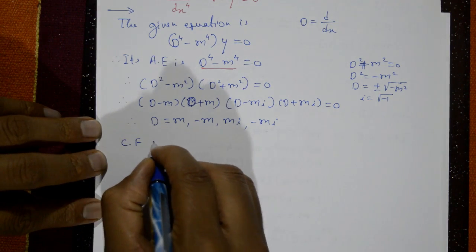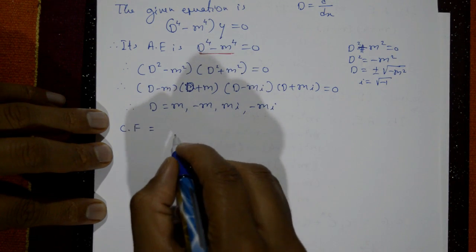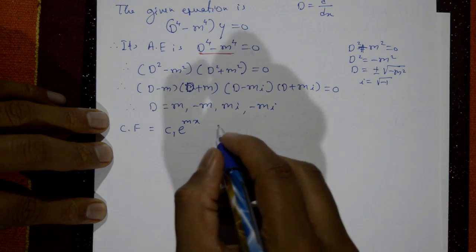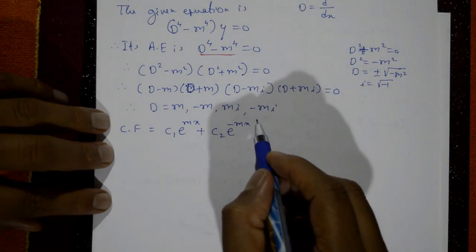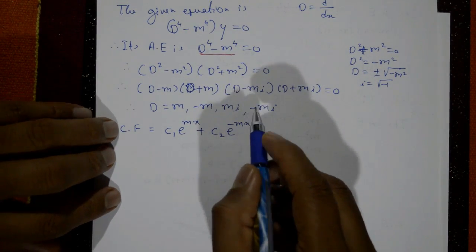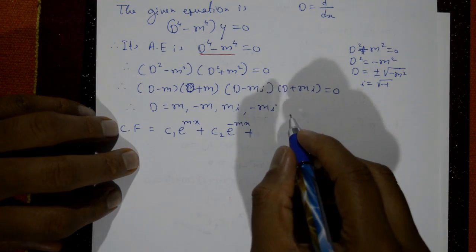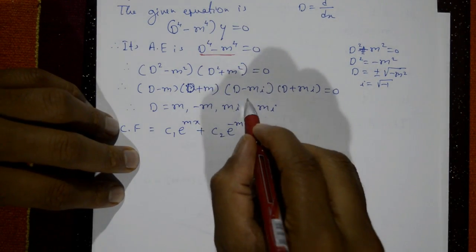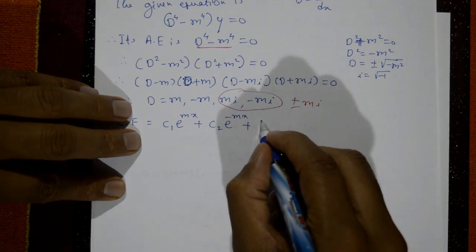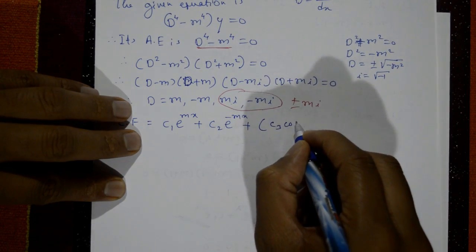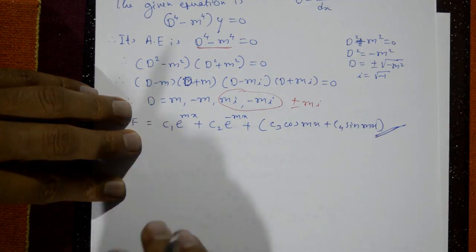Writing the complementary function: roots are all different. For the first two real roots, we get c1·e^(mx) plus c2·e^(−mx). For the third and fourth roots, which are complex (alpha = 0, beta = m), the complementary function gives c3·cos(mx) plus c4·sin(mx). Therefore, the required complementary function is c1·e^(mx) plus c2·e^(−mx) plus c3·cos(mx) plus c4·sin(mx).